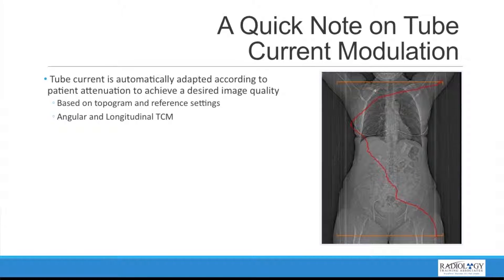I want to take a side step here and talk about tube current modulation because this will become important later when we discuss the impacts that CT shields have in our departments. Tube current modulation is a way for a CT scanner to automatically adapt the mAs according to the patient attenuation seen in the topogram and the desired image quality. The topogram and the image quality reference settings tell the CT scanner how much the mAs should go up or down — this can happen angularly as the x-ray tube rotates around the patient, and longitudinally as the patient moves into the scanner in the z-axis.